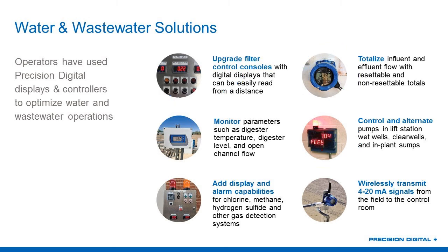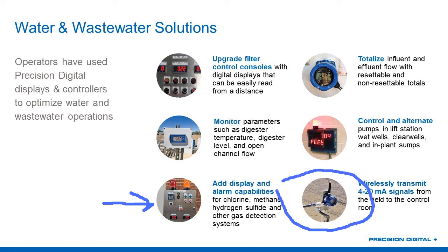We'll also see that we add alarm capabilities. We do a lot of gas monitor applications — this shows a gas monitor application where we show displays for chlorine, methane, hydrogen sulfide, and other gas detection systems like oxygen deprivation. And lastly, we'll talk a little bit about wireless. We do have a lot of wireless applications using our 900 megahertz frequency hopping spread spectrum system.